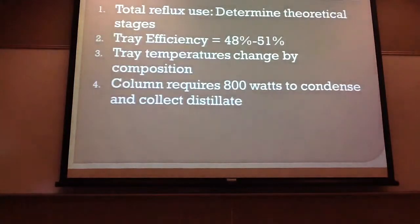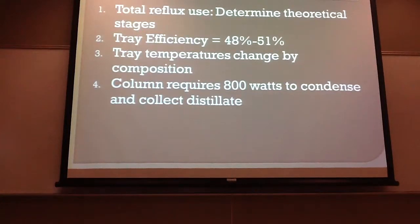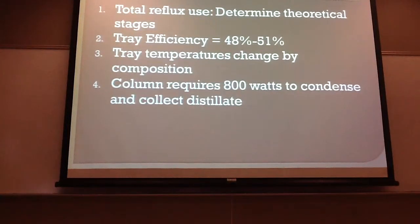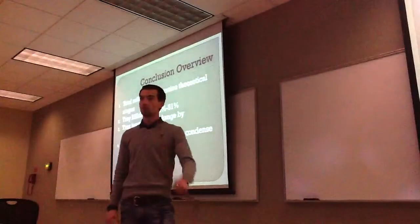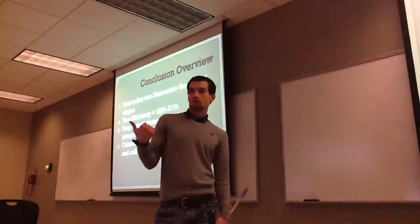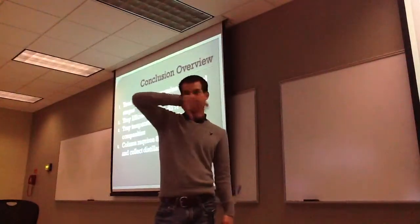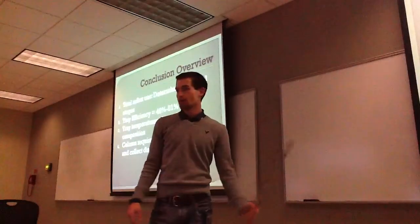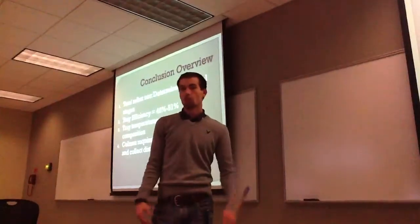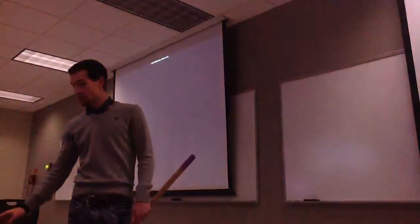In conclusion, under total reflux we can determine theoretical stages and tray efficiency, which we found to be 48–51%. Tray temperatures change based on liquid-vapor equilibrium and composition. From the heat schematic, 800 watts is the minimum needed to vaporize the light component up to the condenser and collect distillate — so you need at least 800 watts to fully run the column.